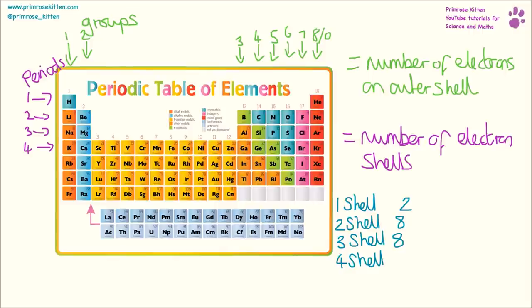If we wanted to draw, for example, silicon here, we can see that is in the third period. So silicon is going to have three shells and it is in group number four. So it's going to have four electrons on the outer shell.